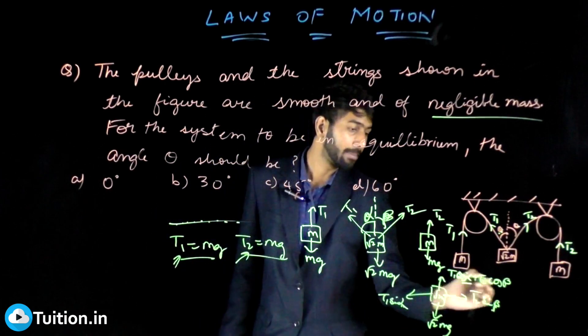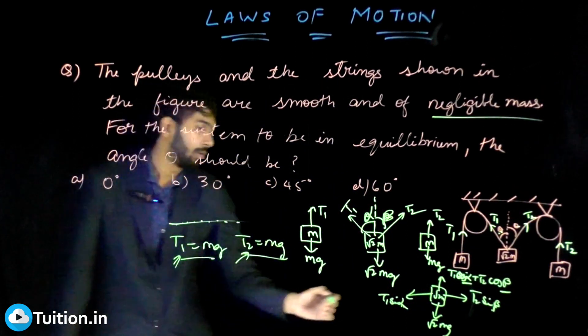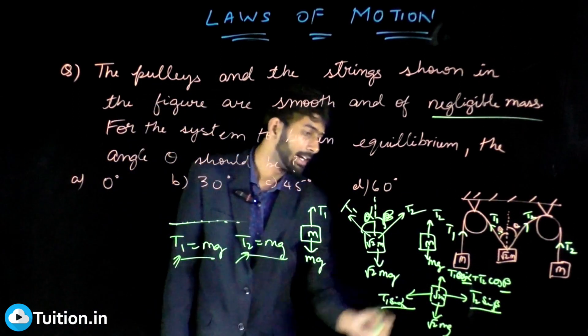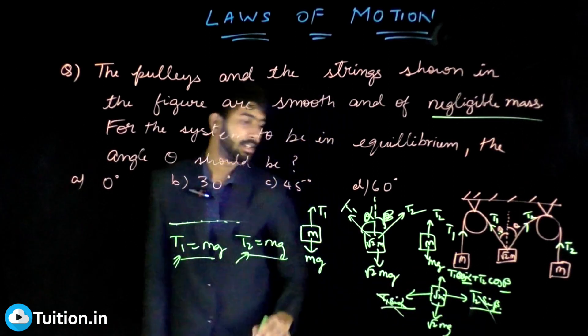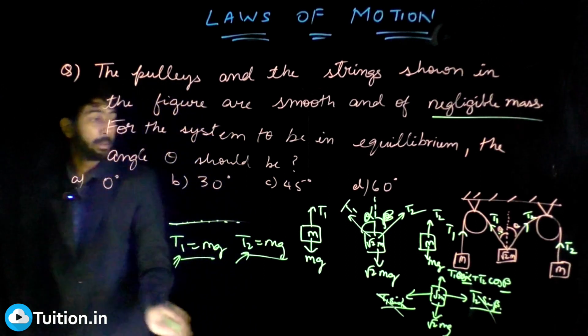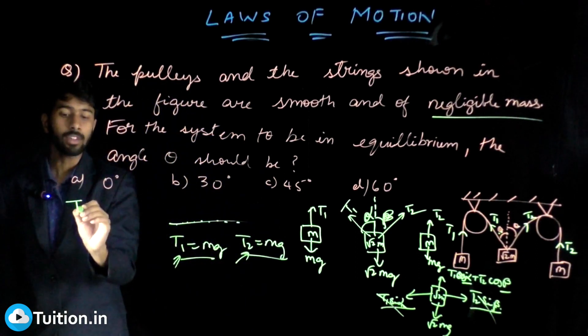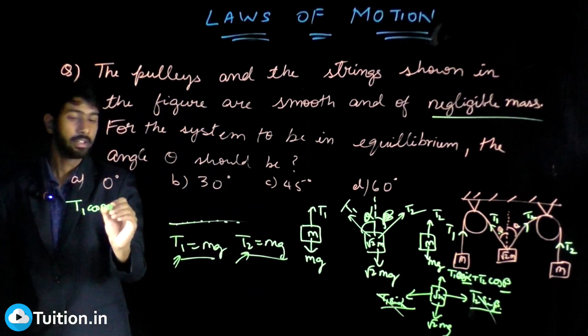So even if it was not given you can assume. Now because it's given, I'll replace alpha and beta with thetas here. So first of all these have to take place. So because alpha equals beta and T1 equals T2, this will always take place, so I don't even need to verify. But for the vertical thing, T1 cos theta plus T2 cos theta equals √2mg.